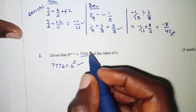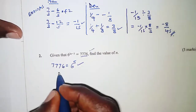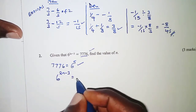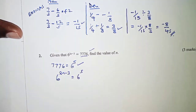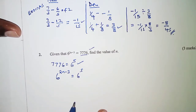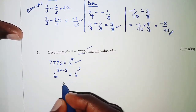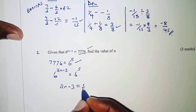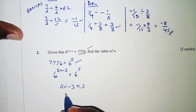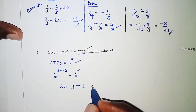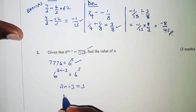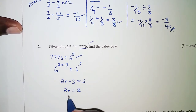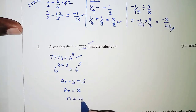Going back to the equation, 6 to the power 2n minus 3 equals 6 to the power 5. At this point we drop the bases and equate the powers: 2n minus 3 equals 5. Adding 3 to both sides gives 2n equals 8, and therefore n equals 4.